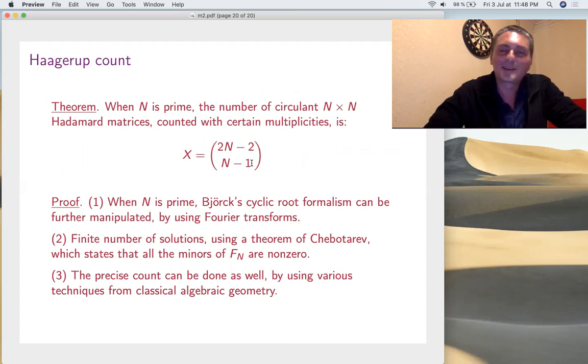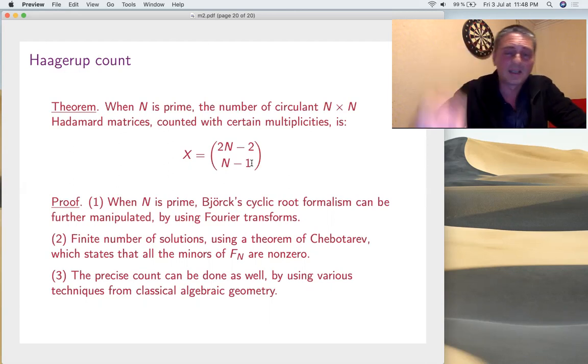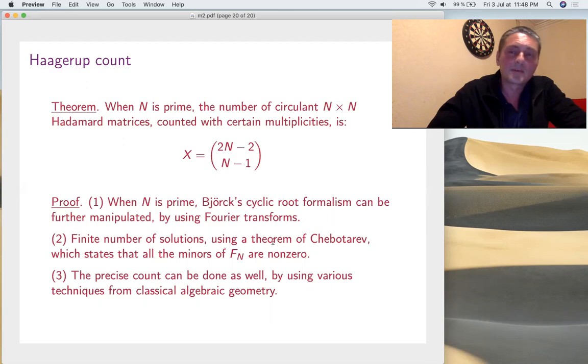First, you have to take the Björck cyclic roots, and further apply some Galois theory there. It's very complicated. It's when n is prime, and then you get a system to be solved, and there, well, you get into some minors, whatever determinants, and you have to use this theorem of Chebotarev, which says that when n is prime, all the minors of the Fourier matrix are non-zero. So, this gives you already finiteness, which is non-trivial at all.